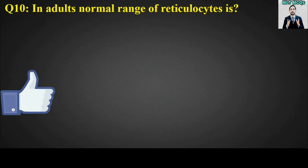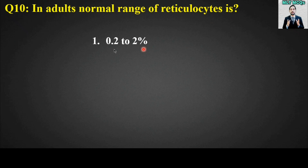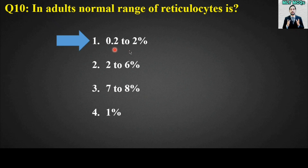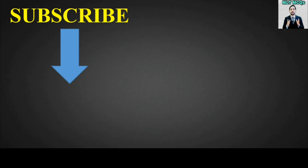MCQ number ten (last MCQ): In adults, the normal range of reticulocytes is 0.2 to 2 percent. The right answer is option number one — in adults, the normal range of reticulocytes is 0.2 to 2 percent.